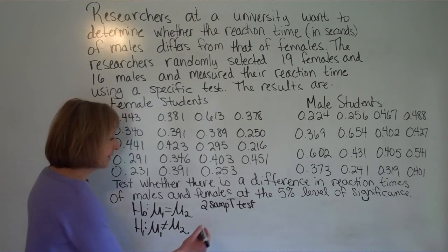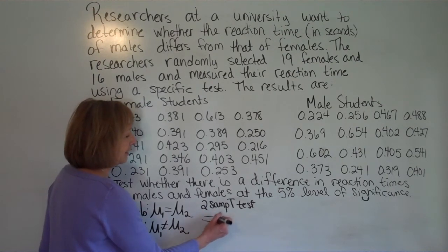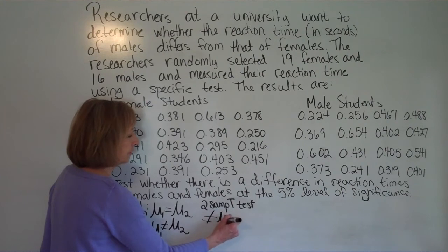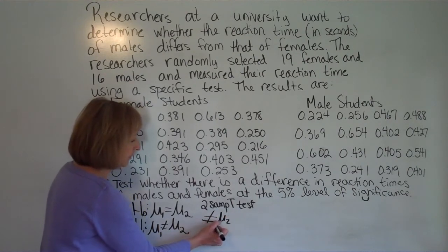And then after that you're going to have to say what your alternate hypothesis is. So for the alternate hypothesis you're going to have that it's not equal to mu sub 2. So pick the not equal to.